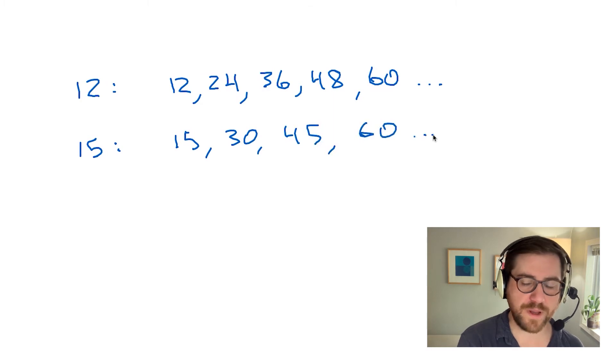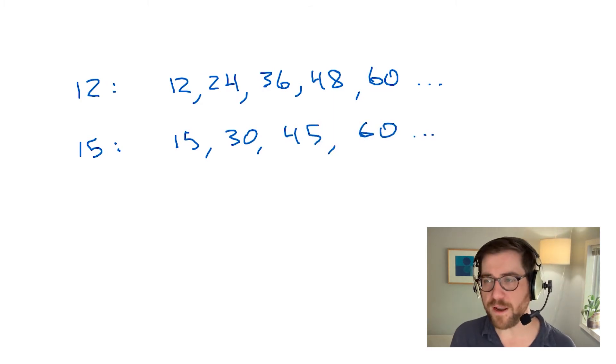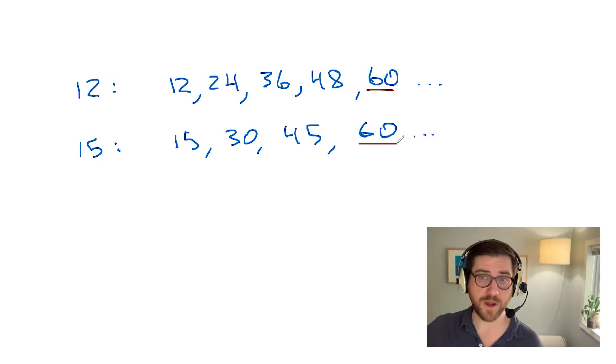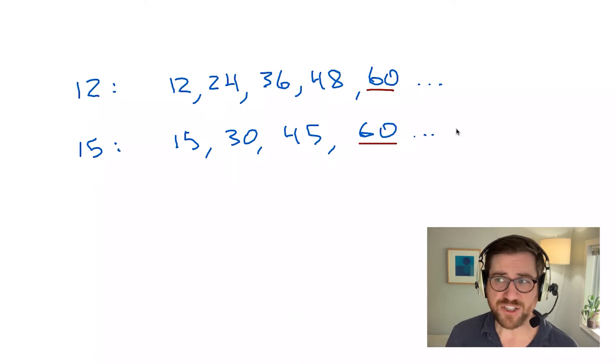You realize that we hit a point where we've got a multiple that is on both lists. So there's our first example of a common multiple. There are others. 120 would be on both lists as well. But this is our least common multiple because it's the first one that we see. So that's the definition.